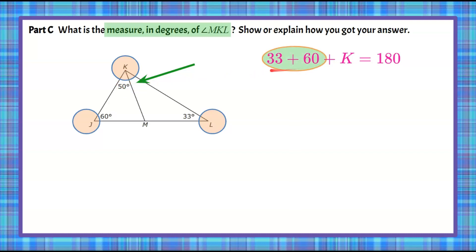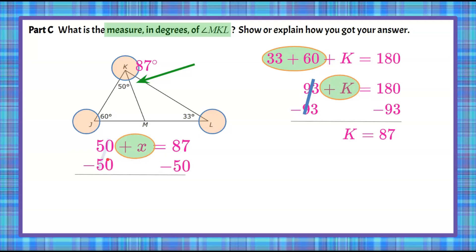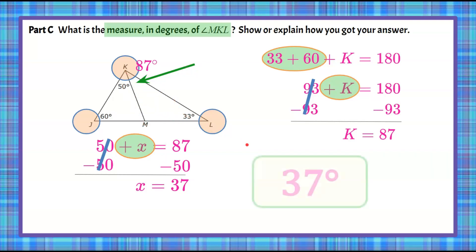Combining like terms: 33 plus 60 is 93, plus K equals 180. To solve for K, we subtract 93 from each side, giving K equals 87 degrees. So this entire angle K is 87 degrees. Therefore 50 plus the unknown angle X must equal 87. Subtracting 50 from each side gives X equals 87 minus 50, which is 37. So angle MKL is 37 degrees.